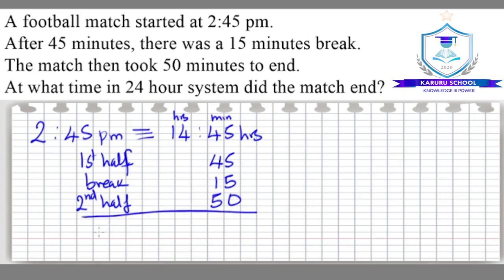So to know at what time the match ended, we will need to add this time together. So we will add 45 minutes plus 45 minutes plus 15 plus 50 to get the total time in minutes that was spent. And then if this exceeds the number of minutes that make one hour, then we need to convert that time into hours and then add it into the hours section.